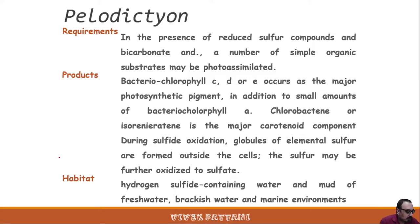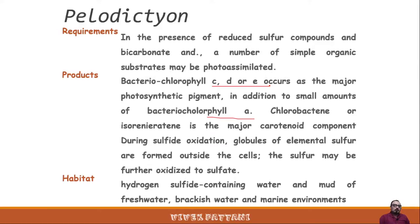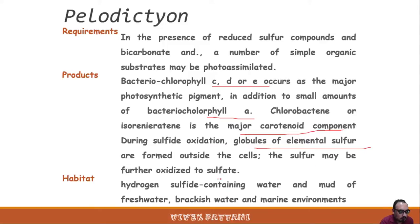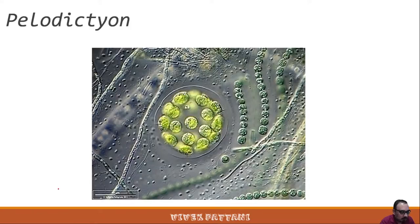Whereas previously discussed bacteria contain bacteriochlorophyll A as the major pigment, Paleodictyum contains bacteriochlorophyll C, D, or E as the major photosynthetic pigment. Chlorobactin is the major carotenoid component. During sulfide oxidation, globules of elemental sulfur are formed outside the cells and the sulfur may be further oxidized to sulfate. Their habitat is hydrogen sulfide-containing water and mud of freshwater, brackish water, and marine environments.